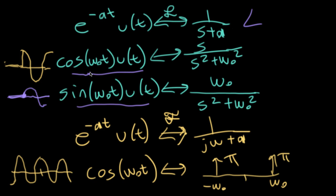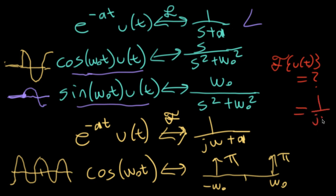There are Fourier transform expressions you can write for these kinds of instant-on functions. For that matter, technically speaking, there is a Fourier transform of a unit step function. It is definitely not one over j omega.